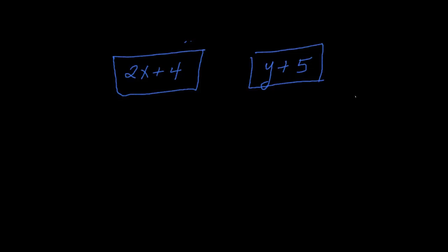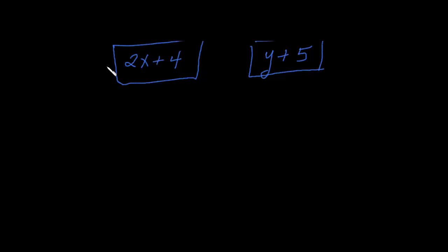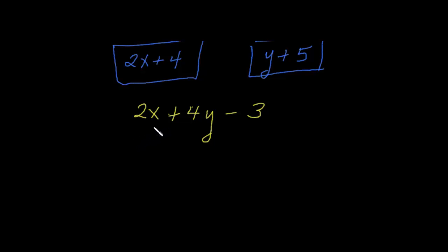Let's take a look at some other expressions and learn their parts. Let's make up one: 2x plus 4y minus 3. A really important point: this x is a variable. We will not be using x as a multiplication symbol in algebra. One of the first things you want to know about an algebraic expression is how many terms it has. Terms are products — since the 2 is right in front of the x, those two values are being multiplied, so that's a product.